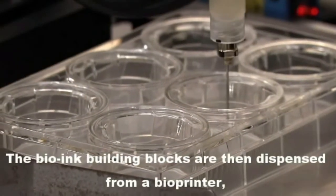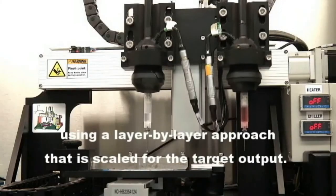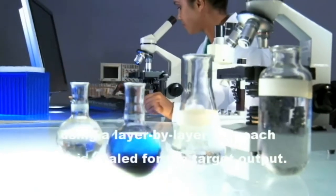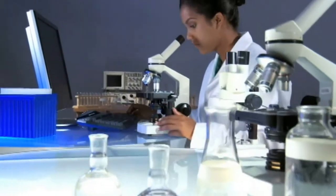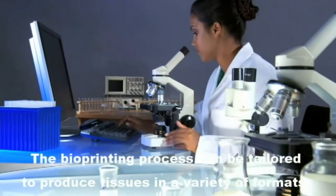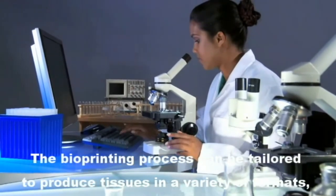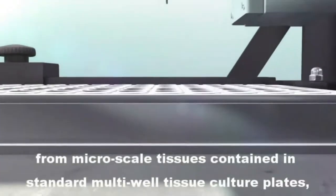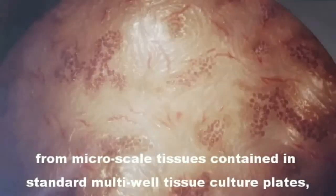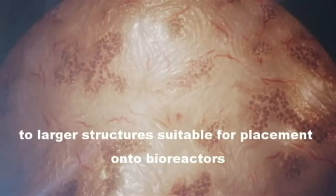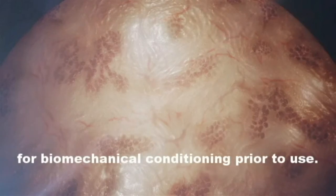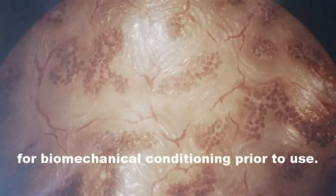The bio-ink building blocks are then dispensed from a bioprinter using a layer-by-layer approach that is scaled for the target output. The bioprinting process can be tailored to produce tissues in a variety of formats, from micro-scaled tissues contained in standard multi-well tissue culture plates to larger structures suitable for placement onto bioreactors for biomechanical conditioning prior to use.